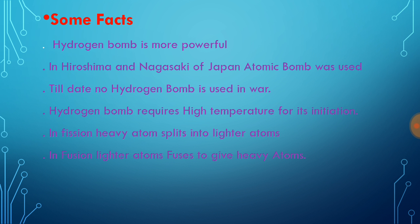Some facts about atom bomb and hydrogen bomb: hydrogen bomb is more powerful. In Hiroshima and Nagasaki of Japan in 1945 A.D. during Second World War, atomic bomb was used. Till date, no hydrogen bomb has been used in war. Hydrogen bomb requires high temperature for its initiation. In fission, heavy atom splits into lighter atoms, and in fusion, lighter atoms fuse to give heavy atoms. They are equal opposite phenomena.